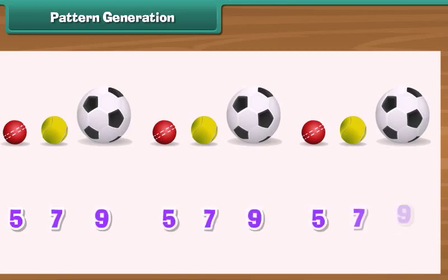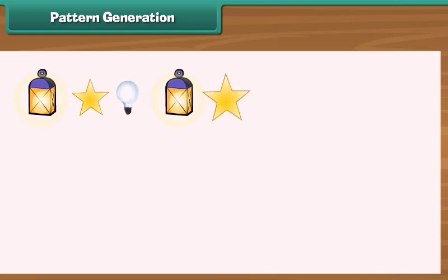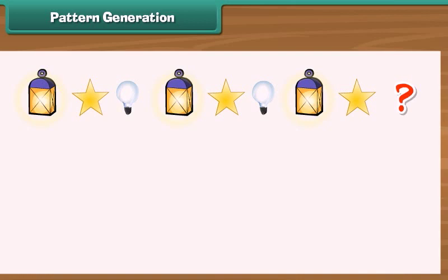Pattern generation. A pattern is a series of objects or numbers which repeat in a pre-decided manner. Look at the given pattern. Guess the next picture required to complete the pattern. There are three objects in the pattern. They appear in a particular sequence.